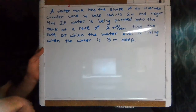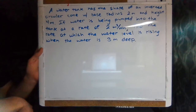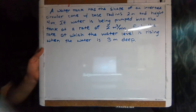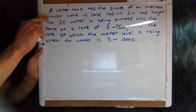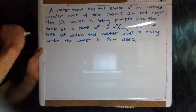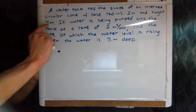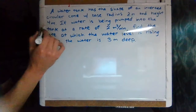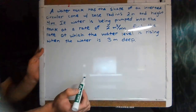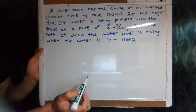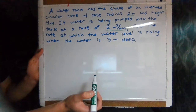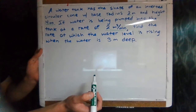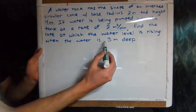In this video we are going over a pretty difficult related rates problem. We have a water tank that has the shape of an inverted circular cone with a base radius of 2 meters and a height of 4 meters. If the water is being pumped into the tank at a rate of 2 meters cubed per minute, our goal is to find the rate at which the water level is rising when the water is 3 meters deep.